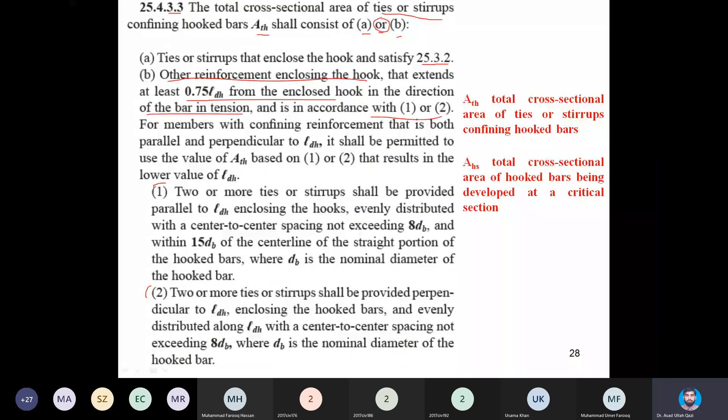Other reinforcement enclosing the hook that extends at least 75 percent of LDH from the enclosed hook in the direction of bar in tension and is in accordance with 1 or 2. For members with confining reinforcement that is both parallel and perpendicular to LDH, it shall be permitted to use the ATH based on 1 or 2 that results in lower value of LDH.